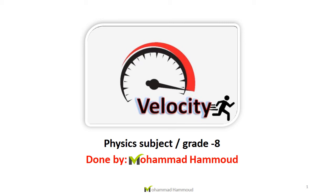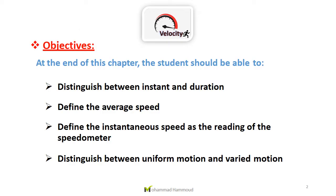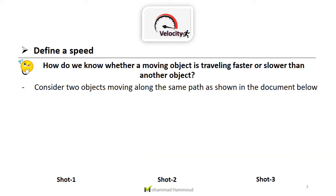Hello Grade 8 students. We will continue our lesson which is about velocity. On the previous video we distinguished between the instant and the duration. Now on this video we have to define the average speed — how we can define a speed, how do we know whether a moving object is traveling faster or slower than another object.